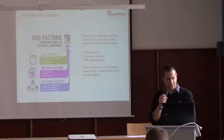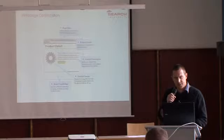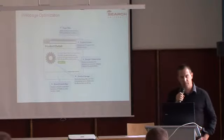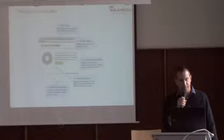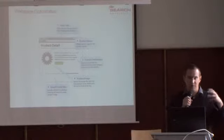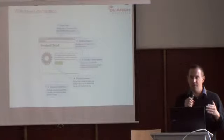Still about web page optimization — here we are talking about the on-page factors. First, the page title: you need to have your main keywords within the title. Then within the body of the page, use the keywords and especially the main keywords within the H1 tags. It's better to place the H1 tags with the main keywords at the top of the content within the body of the page.